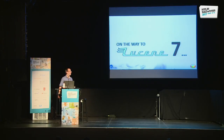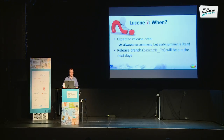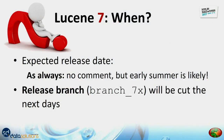The first slide is on the way to Apache Lucene 7. The first question is: when? The expected release date is not yet announced. As always, we have no comment about that, but early summer is likely. As far as I have seen on the mailing list last week, the release branch, branch 7x, will be ready in the next days, and the release process should start very soon after that.